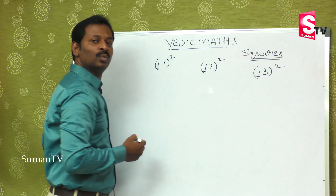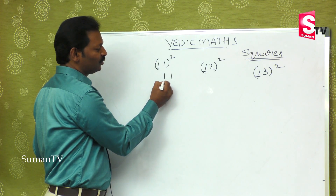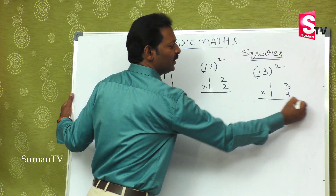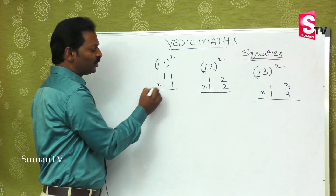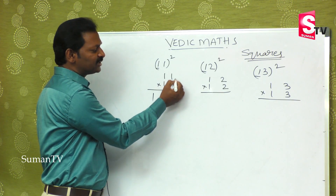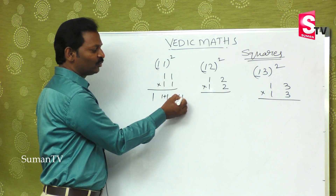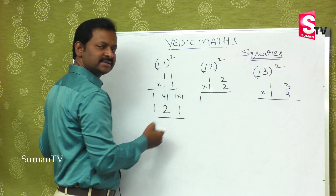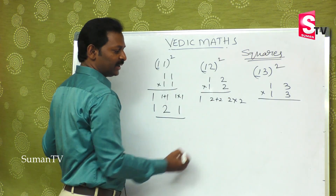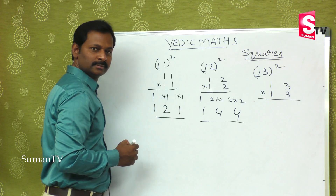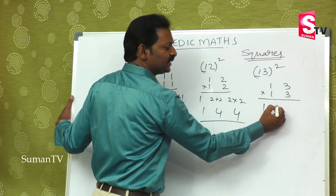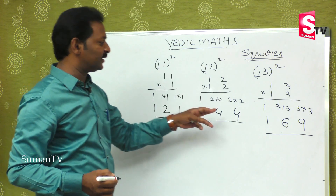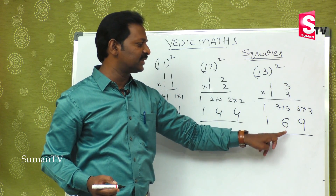For numbers starting with 1, like 11 square, 12 square, 13 square: first 1 into 1 is always 1. Then in the middle we add the units digits — for 11, that is 1 plus 1. Then multiply: 1 into 1. So 11 square gives 1, 2, 1. For 13 square: first 1 into 1 is 1, then 3 plus 3 is 6, then 3 into 3 is 9 — so the answer is 169.